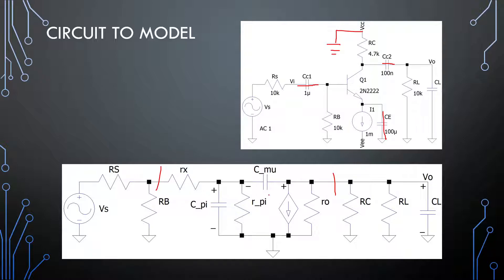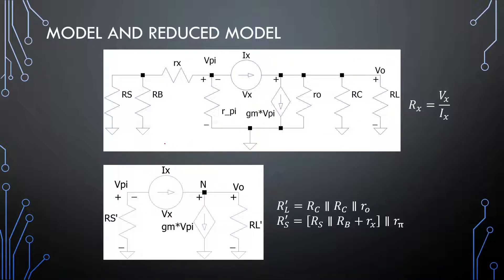For our first analysis we are going to leave out C_pi and C_load. Our model will replace the C_mu value with a voltage current source. Note the orientation of the voltage polarities, and we have V_pi in this position. It's important to note that because we have Gm and V_pi for this current source, we must keep track of V_pi — it will feature in the analysis of the circuit.